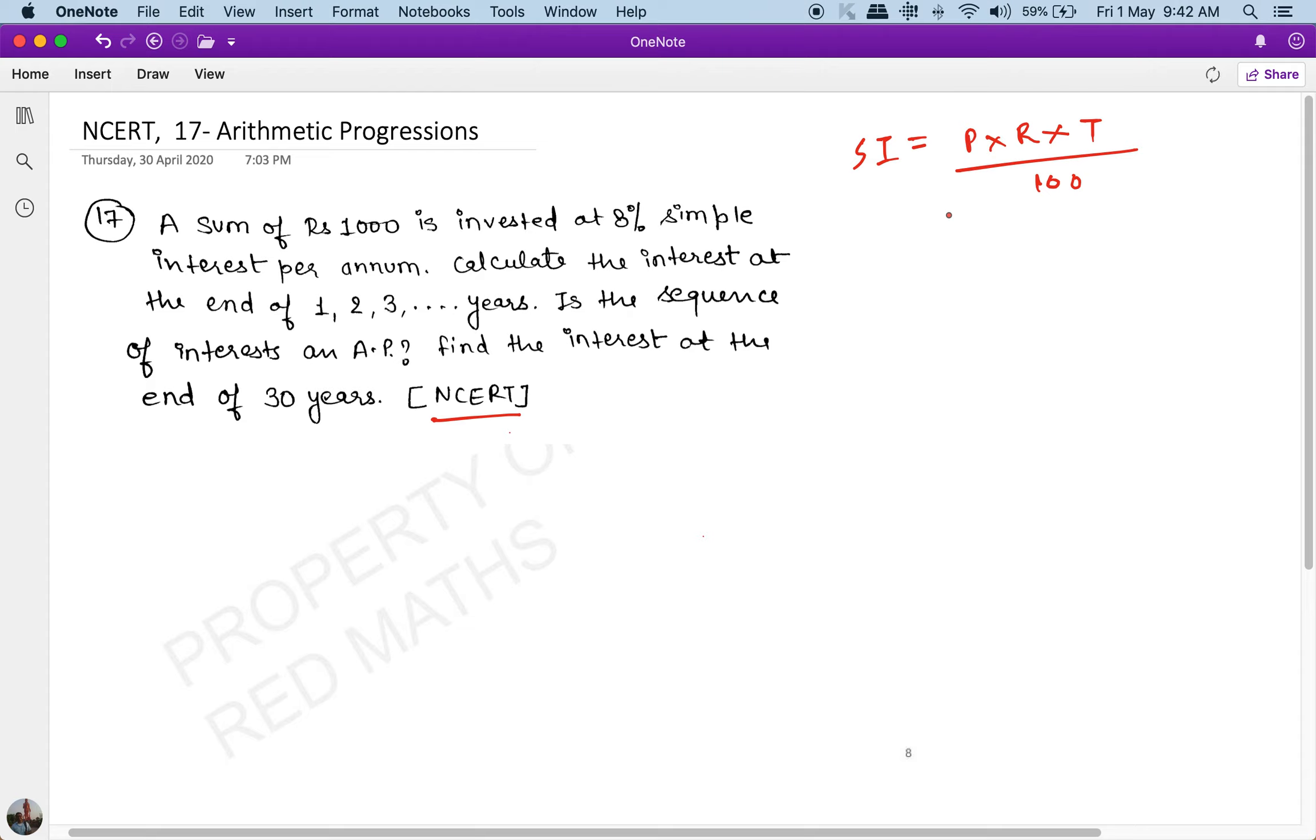And so on. So this value will keep on increasing at a certain pace and we have to find that pace. Okay, so at the end of the first year it will be 1000 into R, which is 8 percent, into 1.